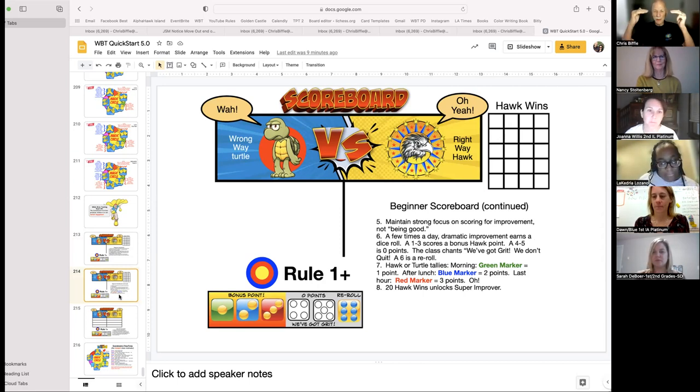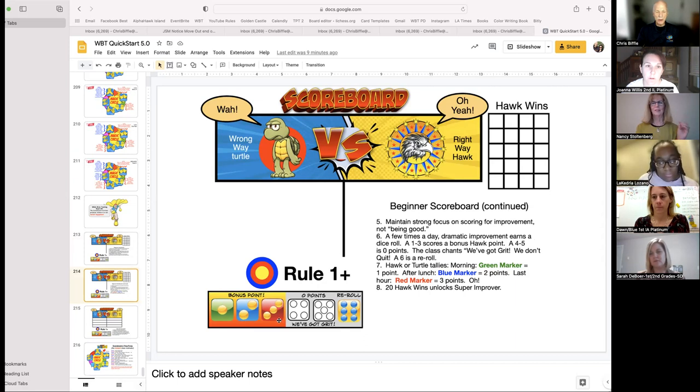Thank you, coach. If we're going to use something in our classroom all day long, we need it to look amazing. Very good. Now, continue with the beginner scoreboard. Be sure you're rewarding for improvement. And a few times a day when you see really good behavior, you roll the dice. A one, two, or three gives the kids a bonus hawk point. A four or five, they say, we got grit, we don't quit. And a six is a reroll. But the dice are powerful. As soon as you pick up the dice, you've got every kid's attention.